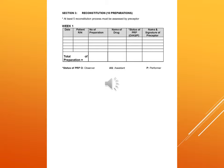Section 3 includes reconstitution of at least a set number of preparations. This includes date, patient registration number, number of preparations, name of drug, status of PRP, name and signature of the preceptor, and total number of preparations. The same manner is followed in week 2.